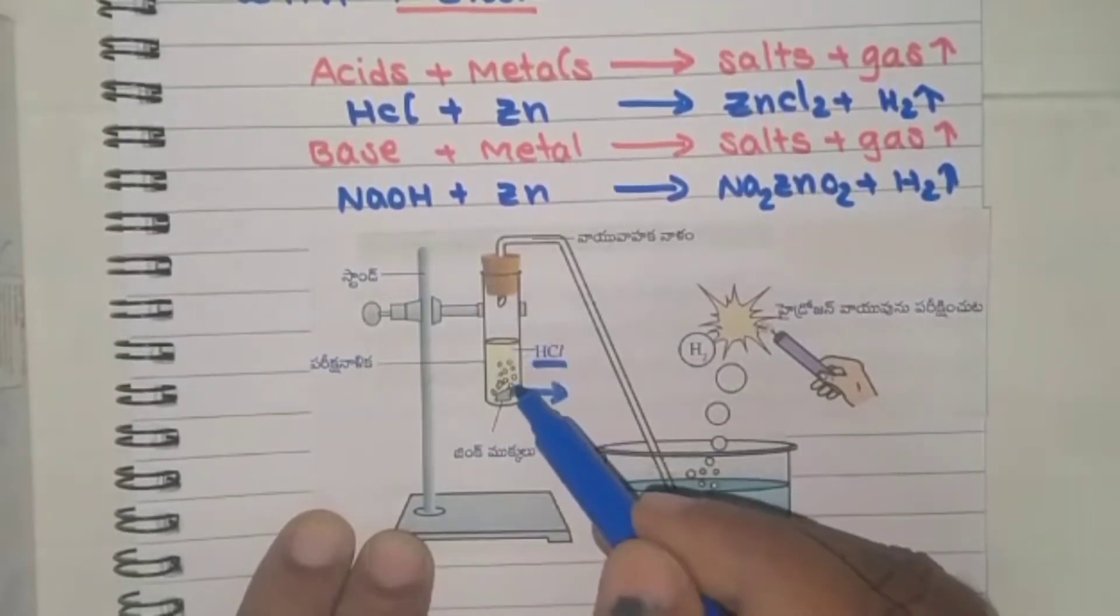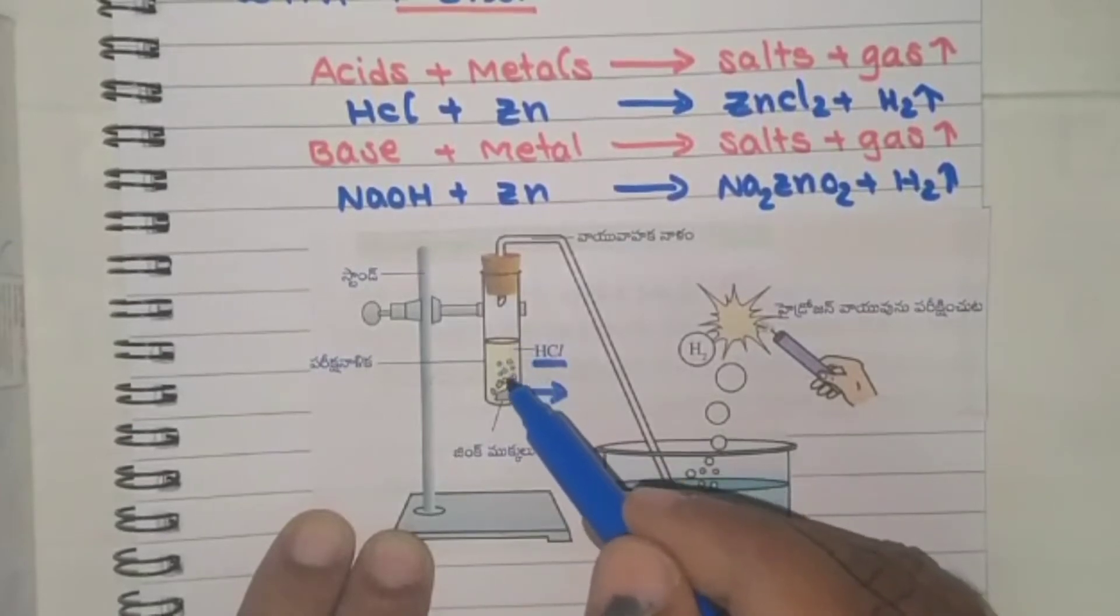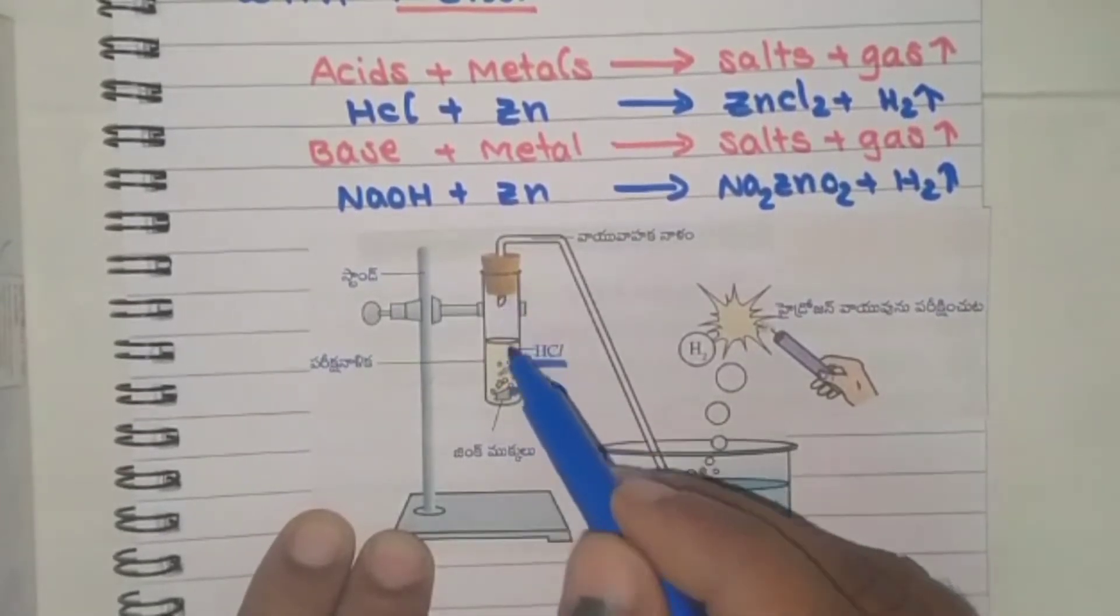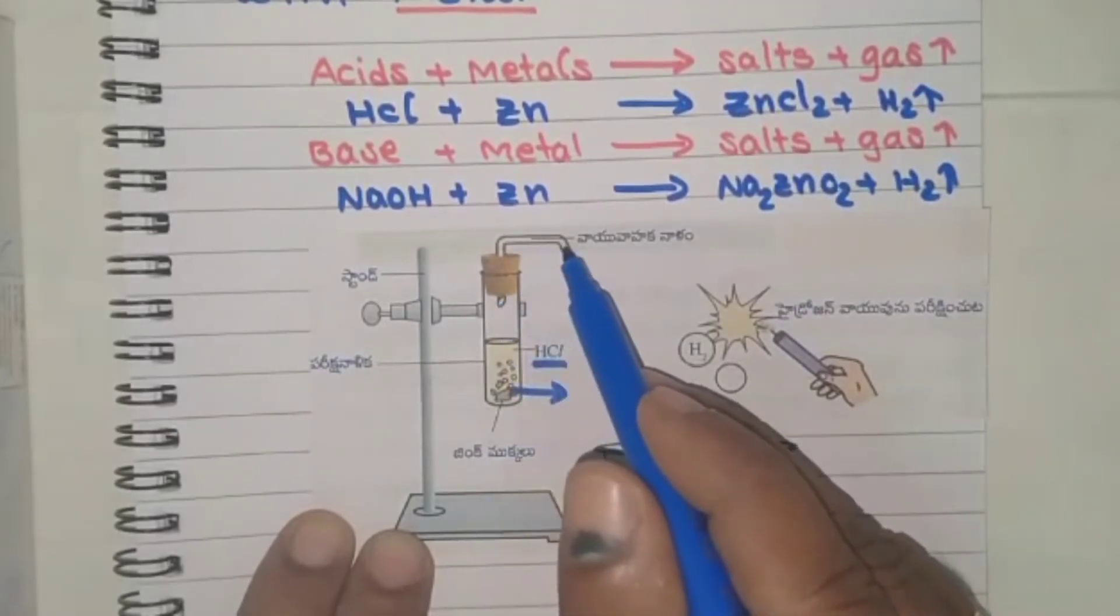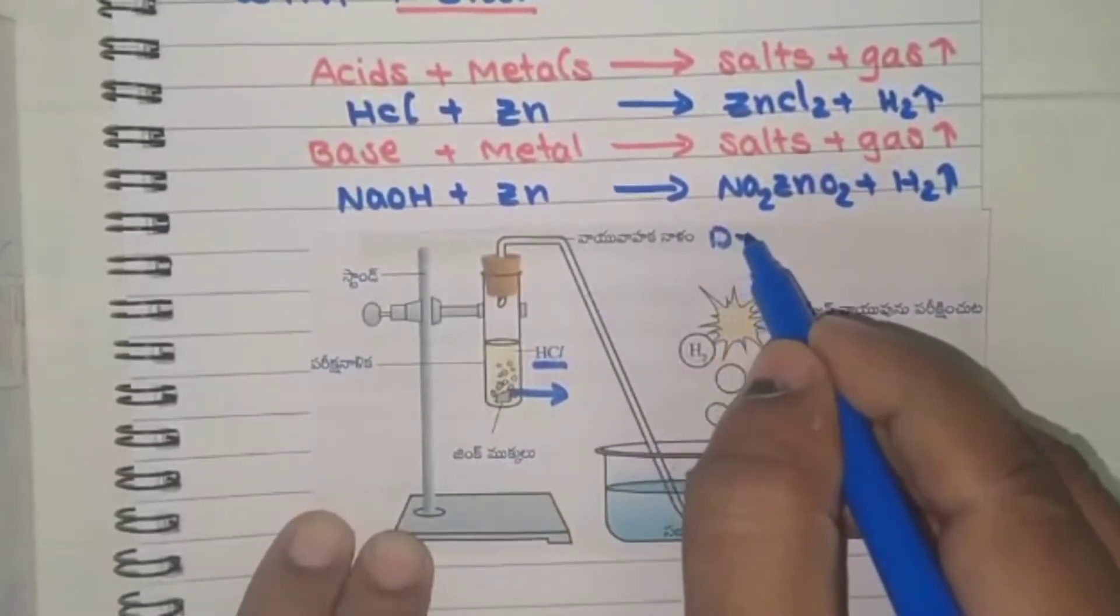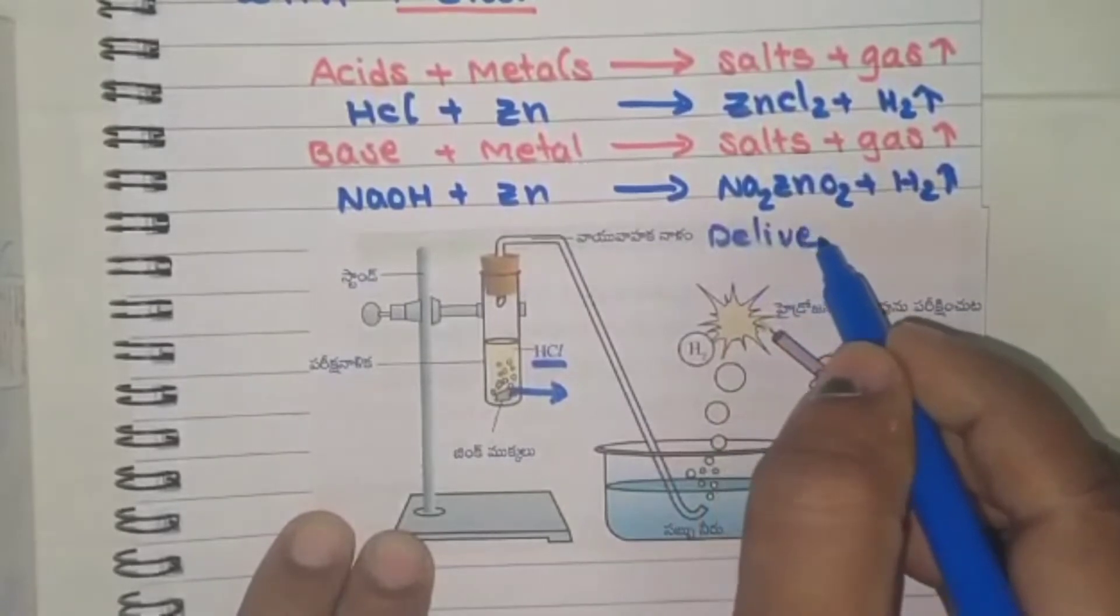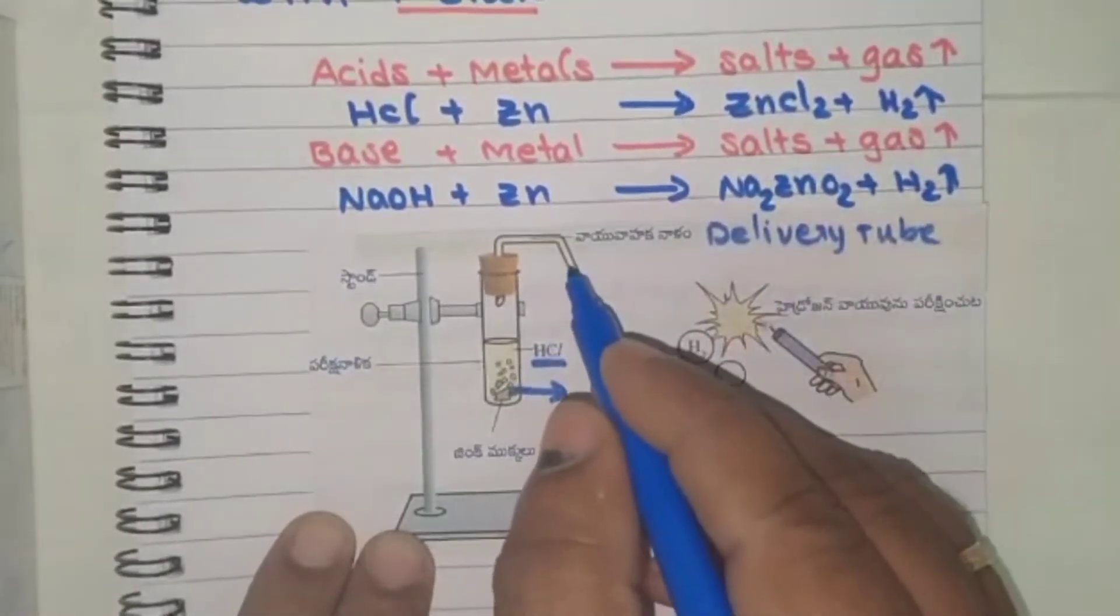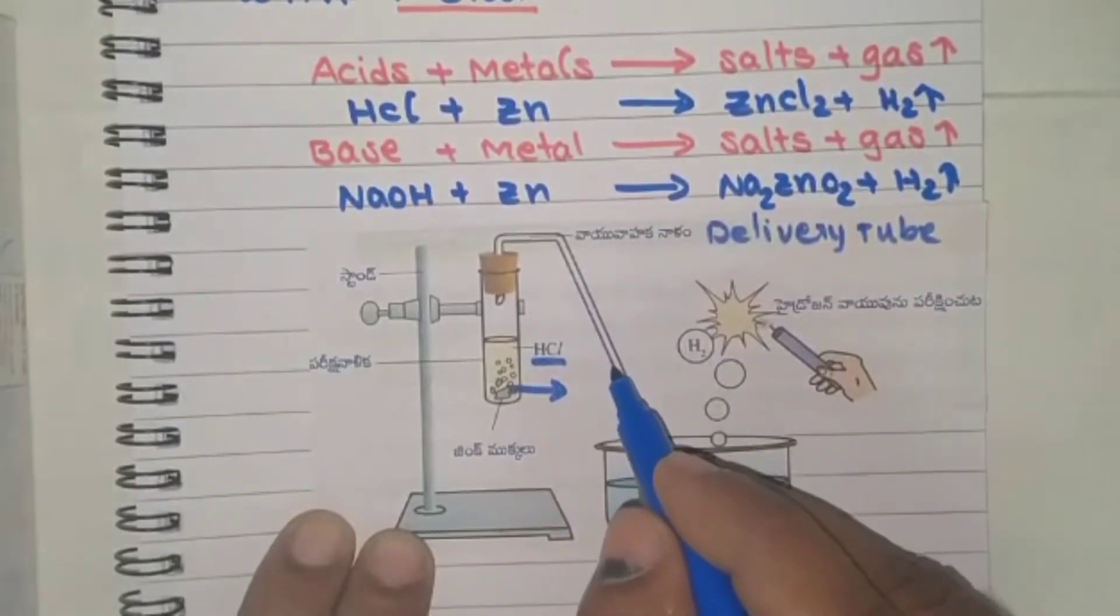When the reaction will start in this test tube, it will release some gases. The gases out through the delivery tube. In the delivery tube, these gas enter into that.